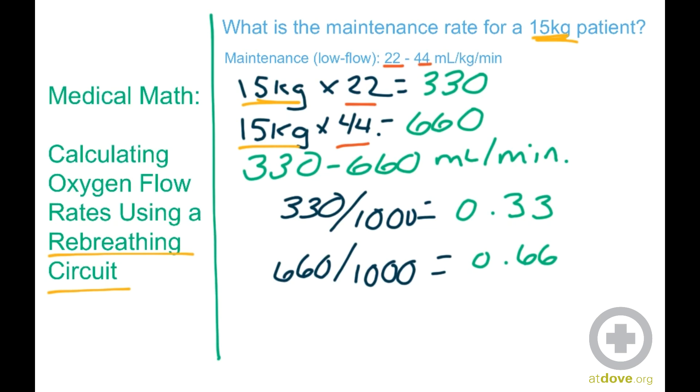So our maintenance low flow oxygen rate is 0.33 to 0.66 liters per minute. The low end of our formula was 330, so that's the number I put there. And the high end is 660, which I put in there, and I divided it by 1,000 to convert milliliters into liters.